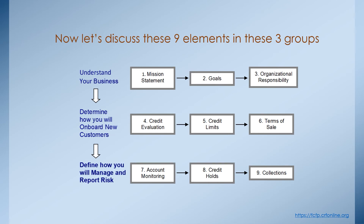After determining how you'll onboard new customers, you then have to define how you're going to manage existing customers and report risk. In element seven, you should determine in your credit policy how you're going to monitor existing accounts — whether you'll use just internal data like past due invoices and aging, or also external data from a third-party credit reporting company to flag customers moving between high risk and low risk. You should then define what activities will be generated from account monitoring.